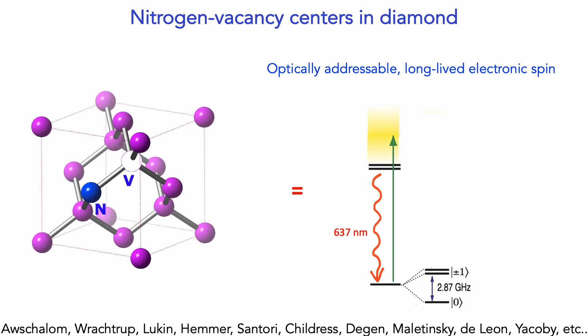The NV center has optical transitions. Here's a simplified energy level structure with a ground electronic state and excited electronic state separated by a convenient visible transition. The ground electronic state has further fine structure because it's a spin triplet with three states: ms equals zero, plus one, and minus one. In a crystal, these states are separated by what's called the zero-field splitting — a natural inherent three-gigahertz splitting at zero magnetic field, conveniently accessible with off-the-shelf microwave components. We can take any two of these levels to form our canonical two-level system, which is our sensor, because a spin in the presence of a magnetic field responds and its energy levels shift.